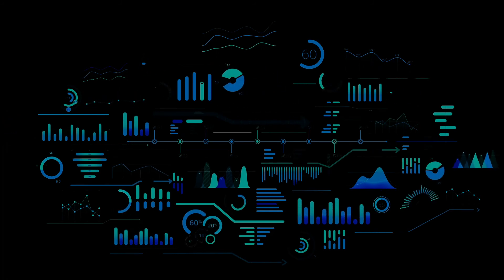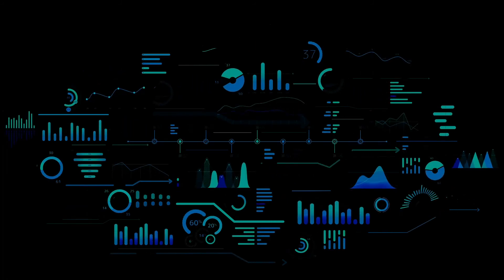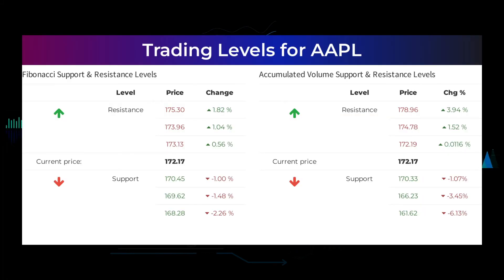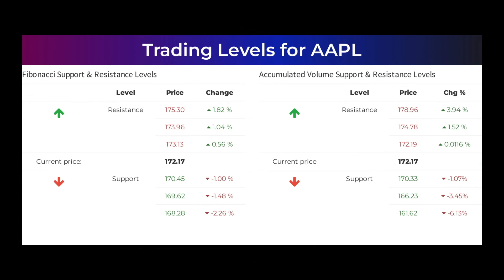The next upcoming earnings report for Q1 2022 is expected to be released April 26, 2022, and the consensus among analysts is $1.43. Here are some possible good day trading levels: on an upturn, Apple meets first resistance at $172.19 — if you do not hold Apple shares you should wait for this level to be broken before placing your bet; if you already have the stock, this is the level you may want to swing trade. On a downturn, Apple finds first support at $170.33, a natural place to put your bet if the support holds with an expectation of a bounce upward. Other levels based on the Fibonacci model: buy at $170.45, $169.62, and $168.28; sell at $173.13, $173.96, and $175.30.